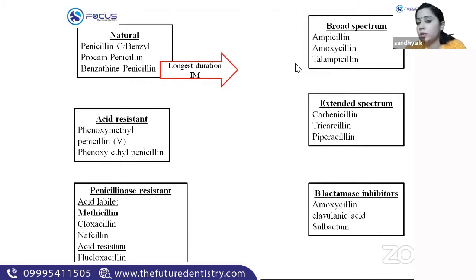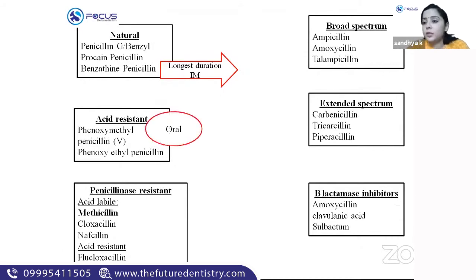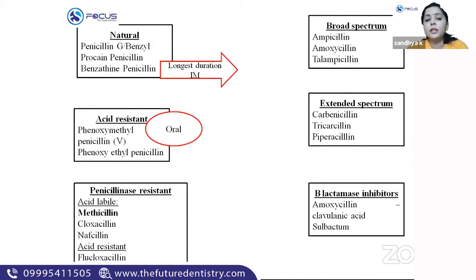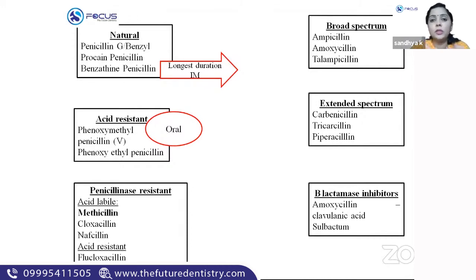Acid-resistant penicillins can be given orally because they resist the acidity of the stomach. These include phenoxymethyl penicillin (penicillin V) and phenoxyethyl penicillin. In contrast, acid-labile penicillins are destroyed by stomach acid and cannot be given orally.